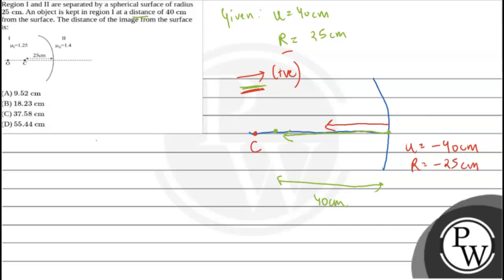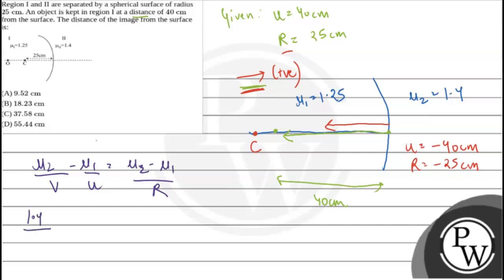Now, we have mu1 given as 1.25 and mu2 given as 1.4. We will put these into the formula: mu2/v minus mu1/u equals (mu2 minus mu1)/r. That gives us 1.4/v minus 1.25/(minus 40) equals (1.4 minus 1.25)/(minus 25).